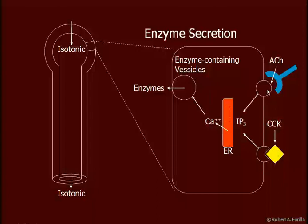Enzyme release is triggered by ACh and by CCK. These two triggers increase IP3 concentration, which increases calcium concentration, triggering the exocytosis of enzymes, which then travel down through the ducts and are eventually released into the duodenum.